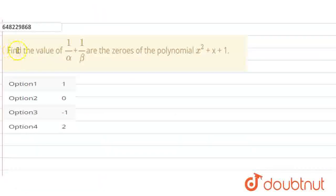Hello everyone, so the problem is to find the value of 1 by alpha plus 1 by beta, where alpha and beta are the zeros of this polynomial. Okay, so let's start the solution.